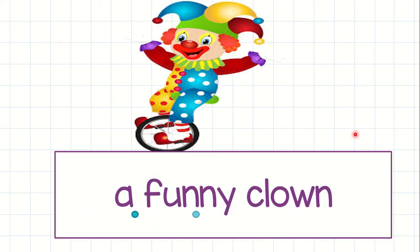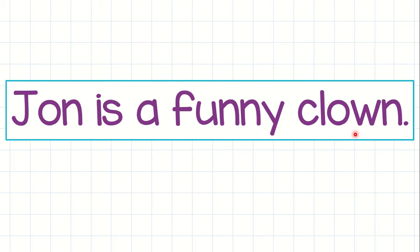A funny clown. A funny clown. Let's put this in a sentence. Say: John is a funny clown. Again, John is a funny clown. In a sentence it always begins with a capital letter and ends with a dot.